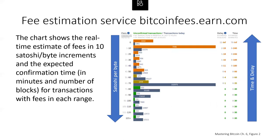Here's a chart showing a real-time estimate of fees in 10-Satoshi-per-byte increments and the expected confirmation time in minutes and number of blocks. For each fee range, for example 61 to 70 Satoshis per byte, two horizontal bars show the number of unconfirmed transactions and total transactions in the past 24 hours. Based on that graph, the recommended high-priority fee was 80 Satoshis per byte. The median transaction size was 226 bytes, so the recommended fee would be 18,000 Satoshis. This fee estimation data can be retrieved via a REST API from the bitcoinfees.earn.com website.